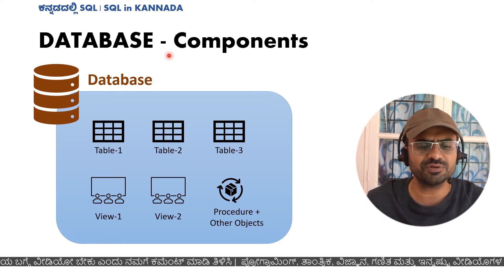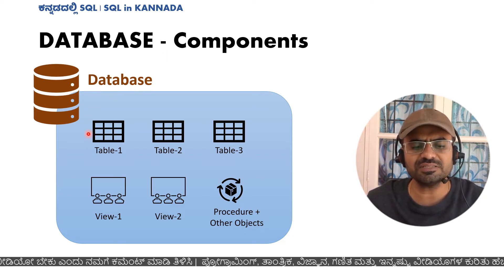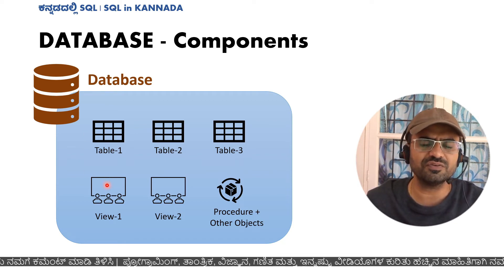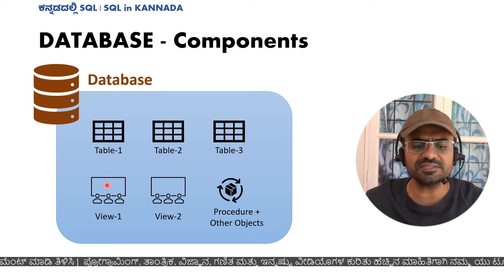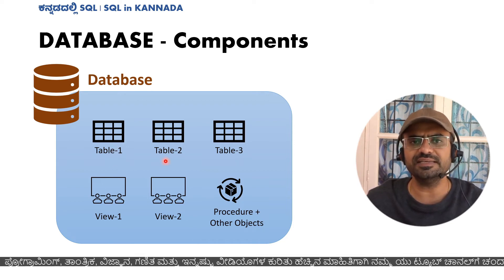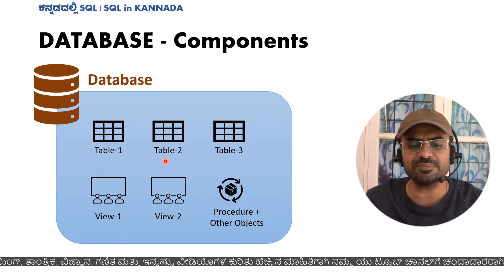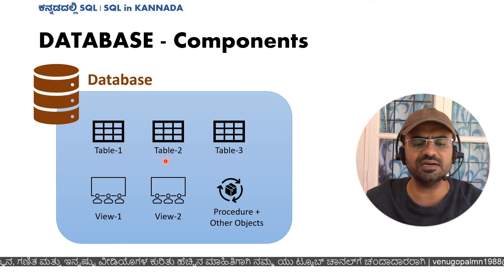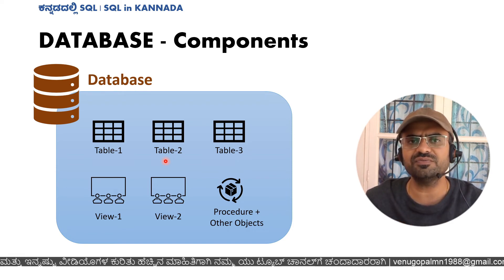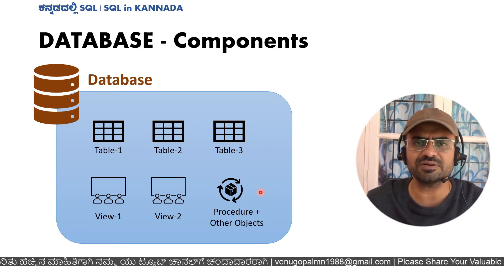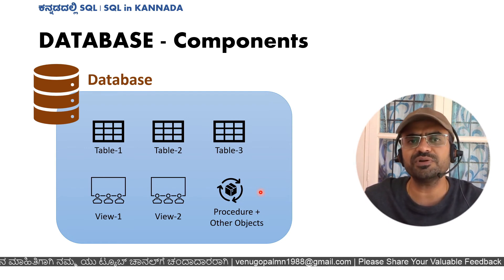A database can have more than one table for different types of data storage. Database also has views, which are not a persistent physical data store. For example, if you have table 1 and table 2, you can combine this data and generate a new dataset — you can create views in database terminology. Views are used to generate new datasets during runtime. Other components include procedures, functions, and triggers — different components in a database.